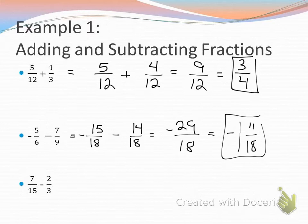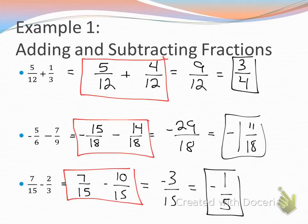Alright, now I want you to go ahead and find your LCD for the next one and change your fractions. Okay, so we find 15 as our LCD. We change our fractions. Now we get negative 3 over 15, which becomes negative 1 over 5.